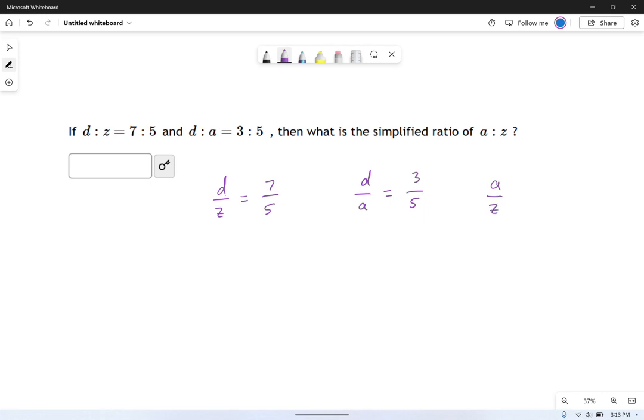Well, how can we use what we're given, which is this and this, to come up with this? That's the question. If you think of these as fractions, it's maybe not so bad. I could, for example, do this. That's d over z times a over d, and that would equal a over z, right? We just cross out the d's right here, and you get a over z.